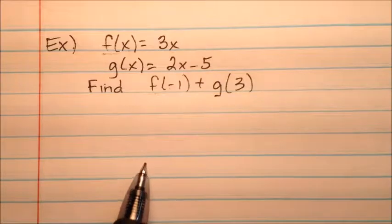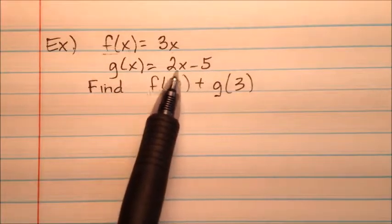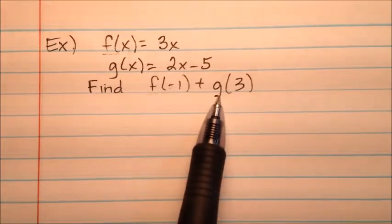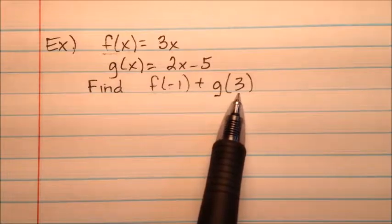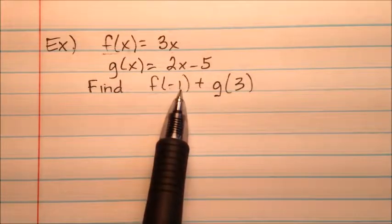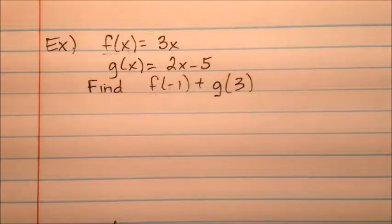So now we're going to go to the next step, and we have a function f and a function g. We're going to find f(-1) + g(3). This means we're going to evaluate f at negative 1, and we're going to evaluate g at 3, and then we're just going to add up those two values.